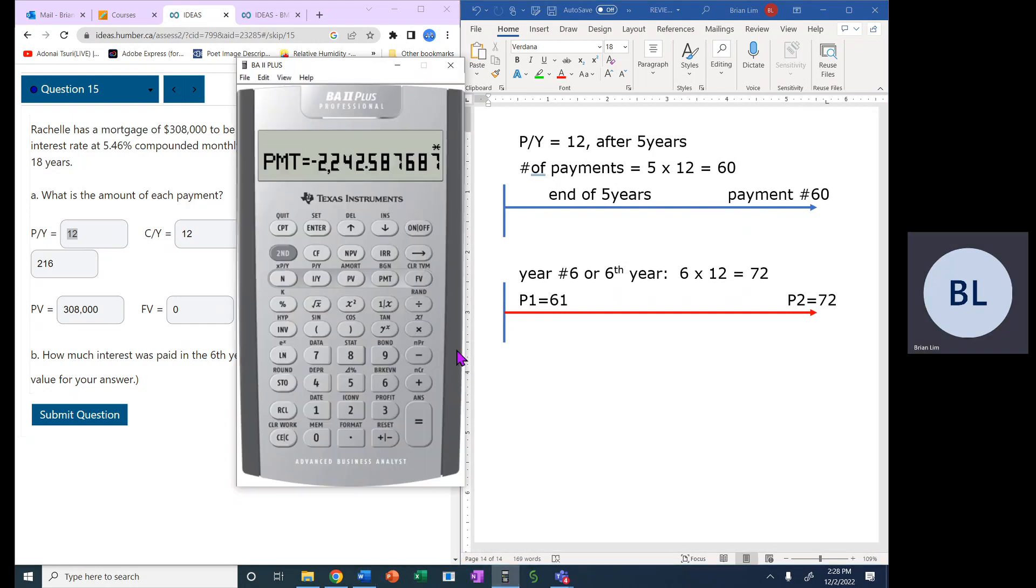Okay, so to do that, let's go to the calculator. There we go. Second, present value, the amortization. P1 will be 61 and P2 will be 72.